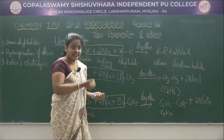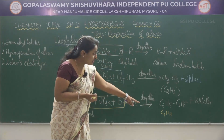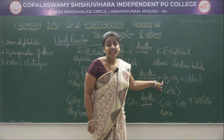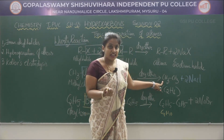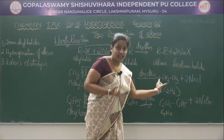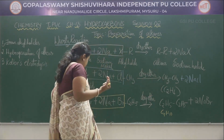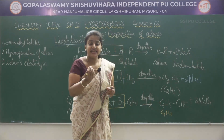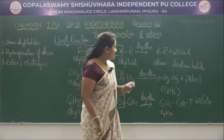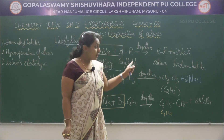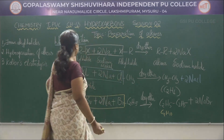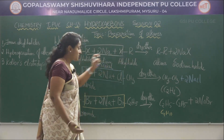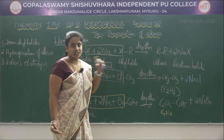By this method we can get the higher alkanes, and these alkanes are in even numbers. This is about the Wurtz reaction, covering its general reaction and examples.